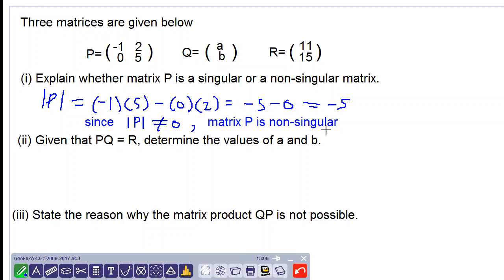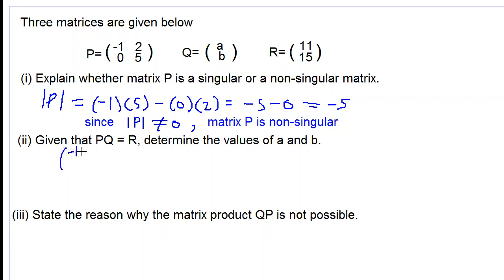Let's move on to part 2. Given that PQ is equal to R, determine the values of a and b. So let's set up the matrix equation P multiply by Q is equal to R.